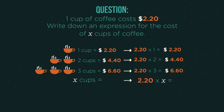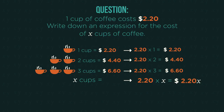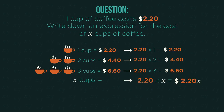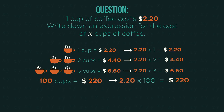In algebra, we remove the multiplication sign. So now, if we wanted 100 cups, we'd simply replace the X with 100.